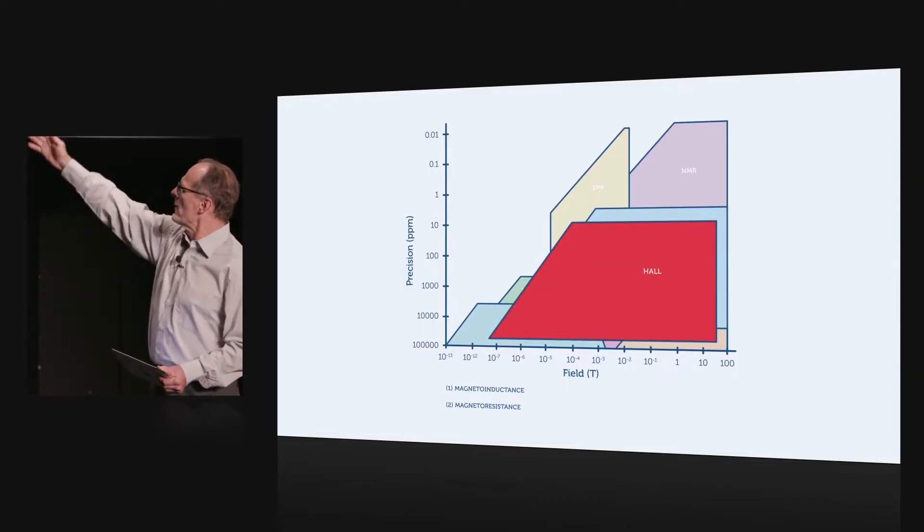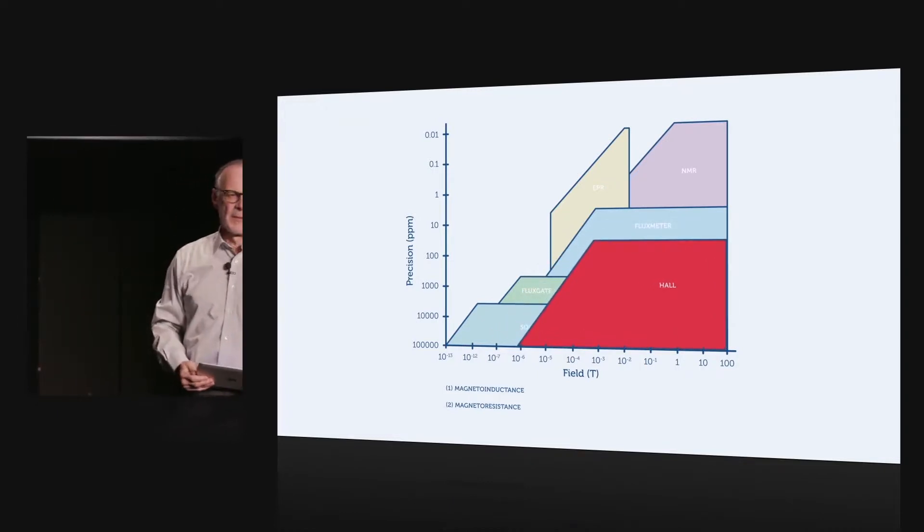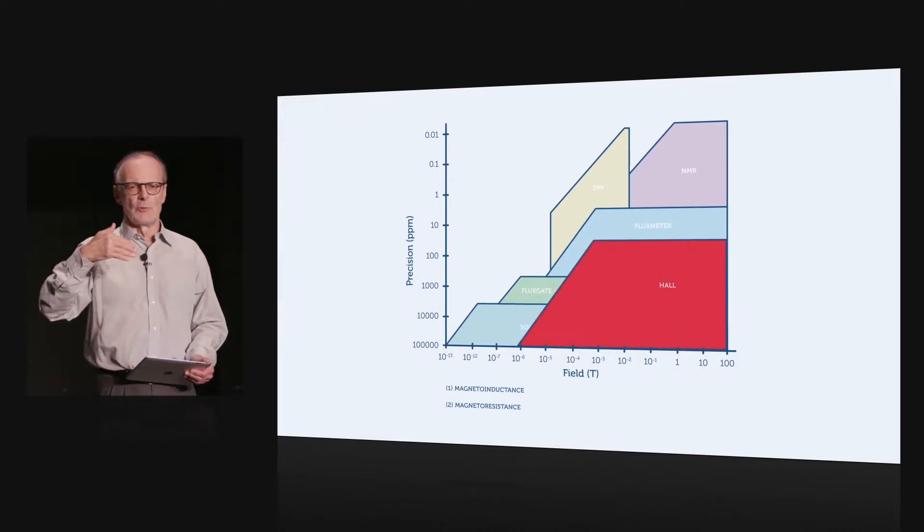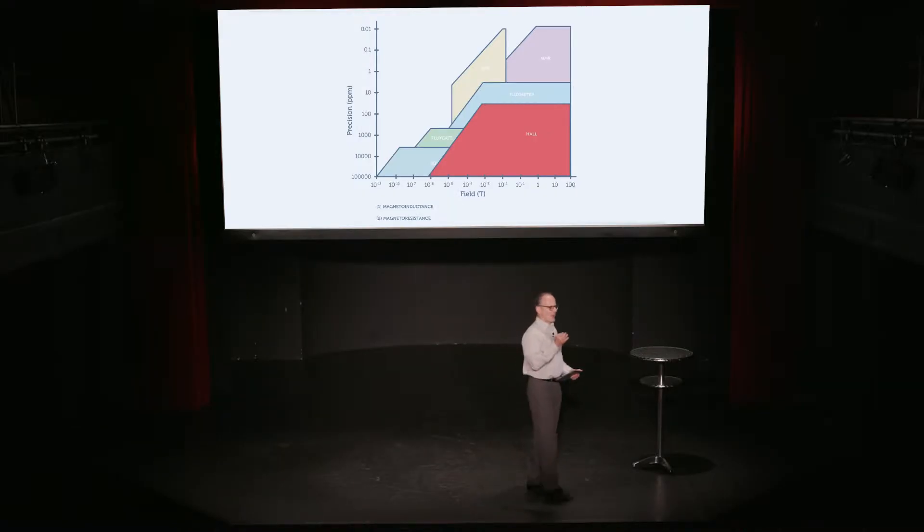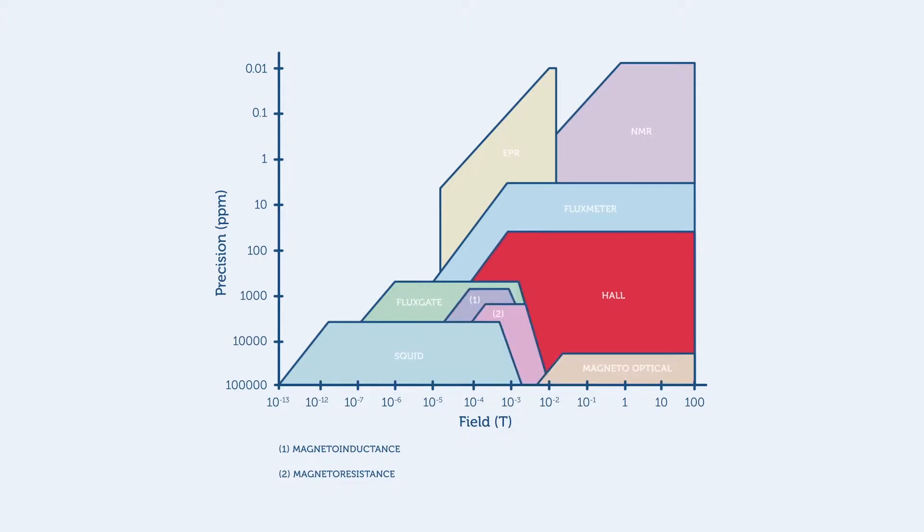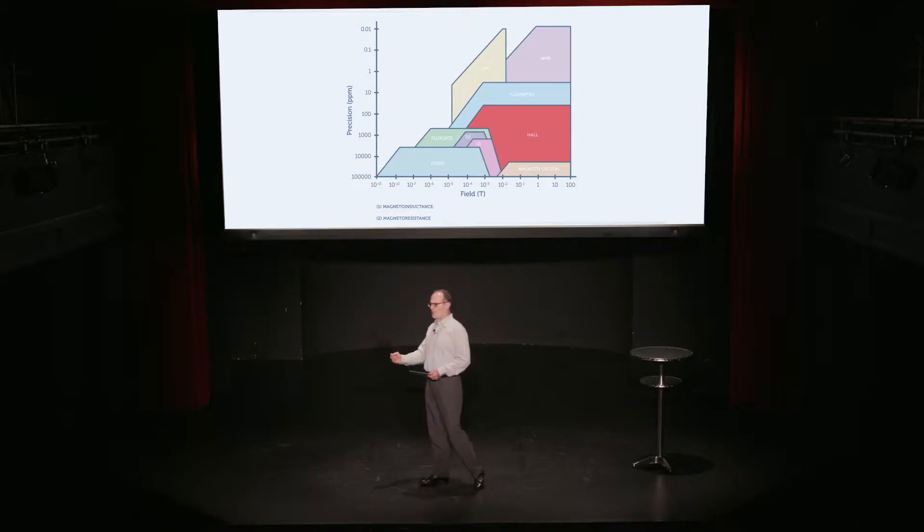As you can see, the red area covers a large area that gives you a wide range of field ranges and with a decent amount of precision. So, let's take a closer look at Hall magnetometers.